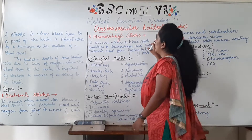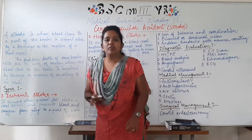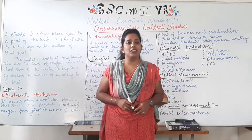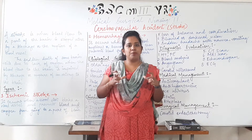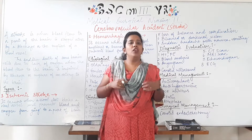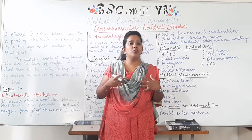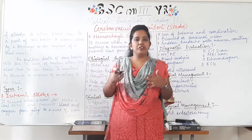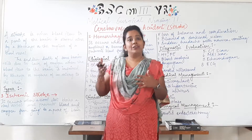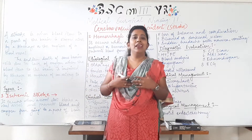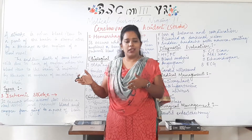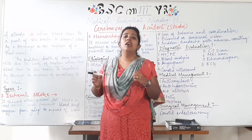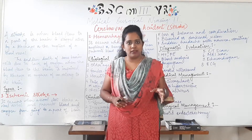Today's topic is Cerebrovascular Accident. Cerebrovascular Accident is a severe form of neurological condition where the brain cells die suddenly because blood flow does not reach certain parts of the brain due to insufficiency of oxygen and blood. That sudden occurring condition is known as Stroke or Cerebrovascular Accident.